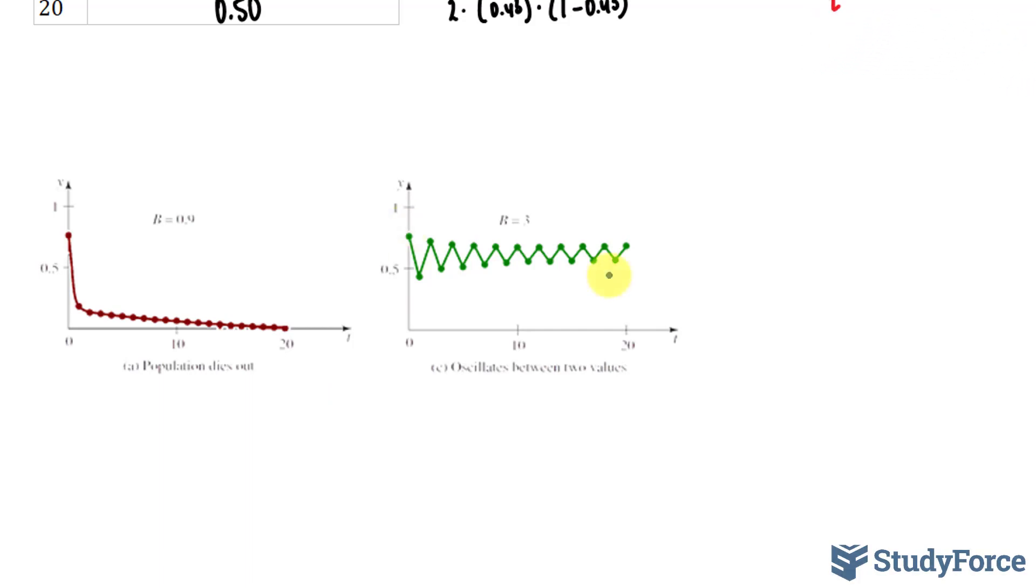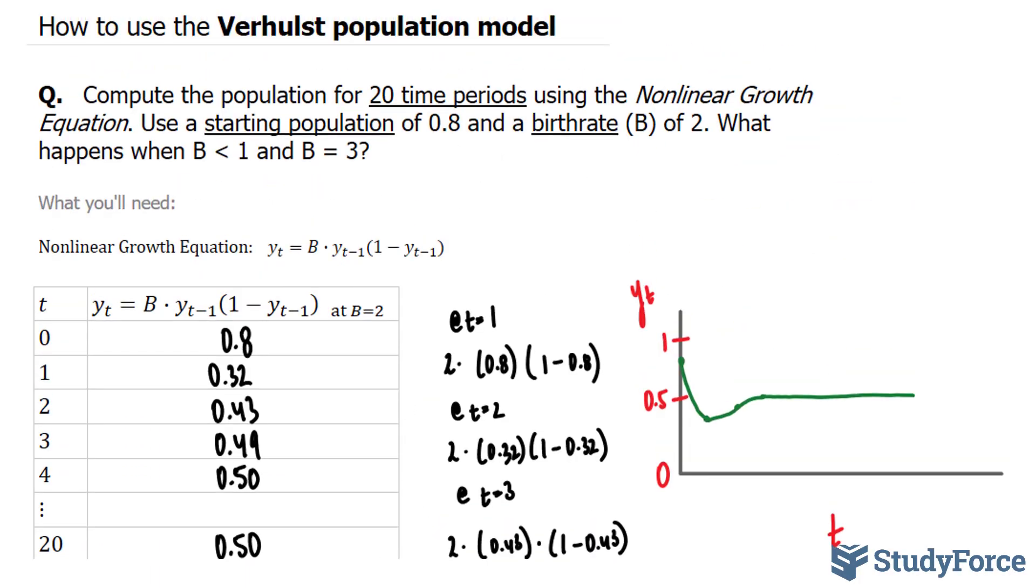This is why it's important for there to be a constant birth rate in a population. That way the population stabilizes, which ensures a good future for that species. And so there you have it. That is how to use the Verhulst population model.